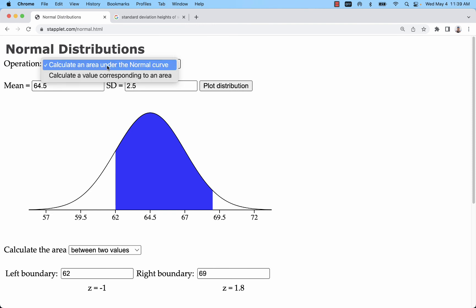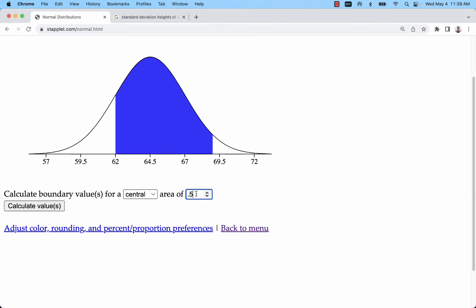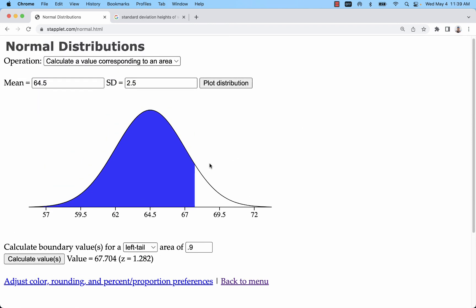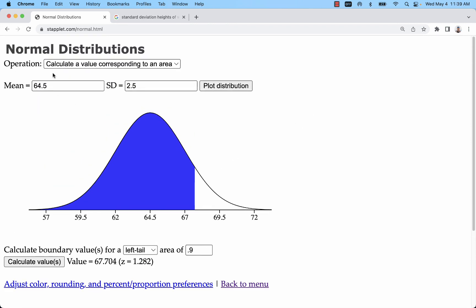Okay, the other way to do it is flip it around. Let's say I want to find the height that's at the 90th percentile. I would want to go left tail, 0.9. And I've got that value of 67.7 inches. So that would be an applied problem just using a mean and standard deviation that's known.